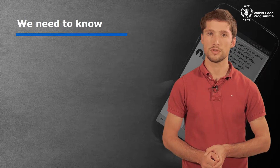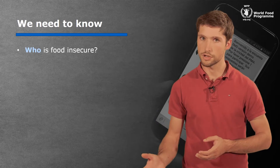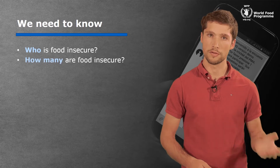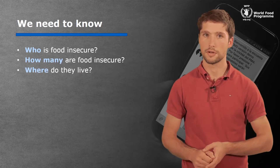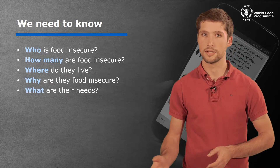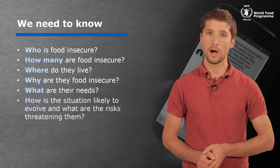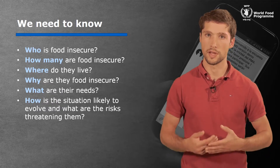The first stage in this process is to define what information we need from our survey. At WFP, we need to answer the following questions: Who is food insecure? How many people are food insecure? Where do they live? Why are they food insecure? What are their needs? How is the situation likely to evolve? And what are the risks threatening them?